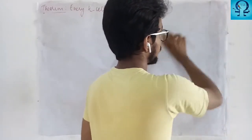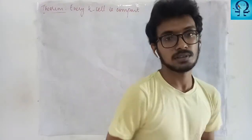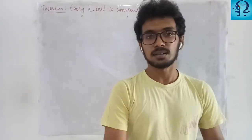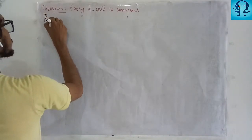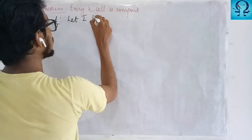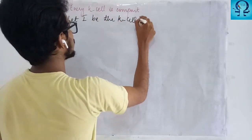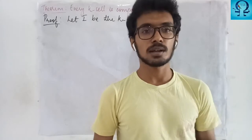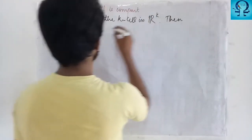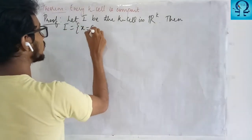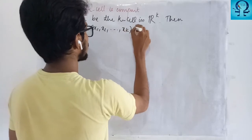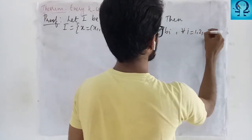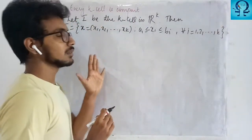That is the idea we are going to prove in this theorem, and once proved, it becomes a result we can directly use. Let I be a K cell in R^K. It consists of points of the form (X1, X2, ..., XK) where Xi lies between some Ai and Bi for all i from 1 to K.